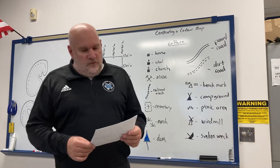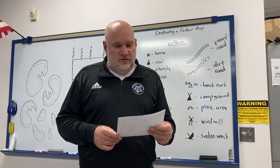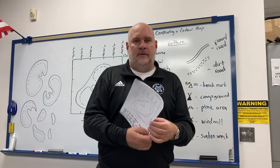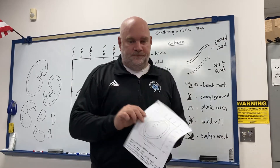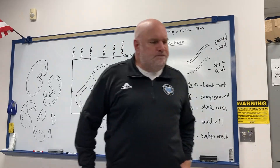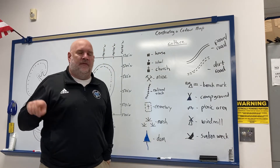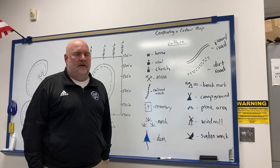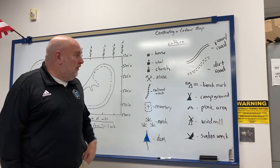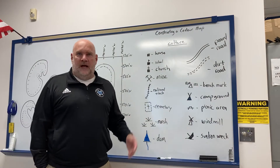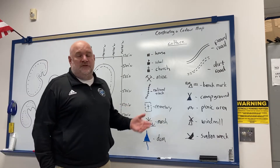Today we're looking at the constructing a contour map lab. On contour maps, besides the lines that represent elevations, there's also something called culture. Culture refers to mostly man-made features that you find in a certain area.